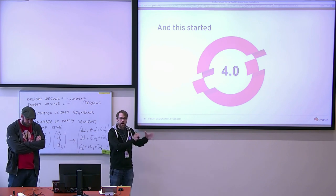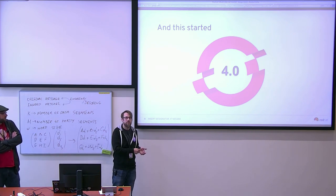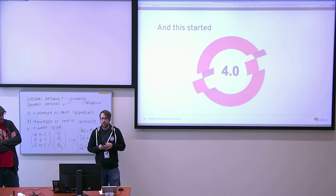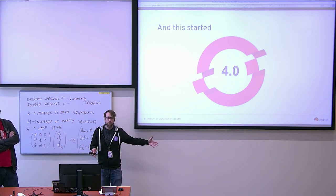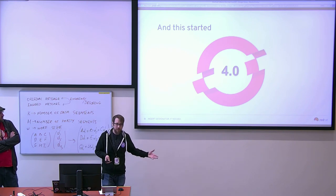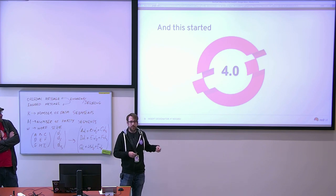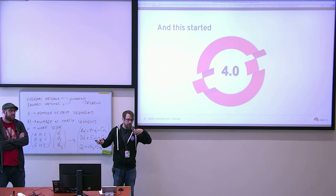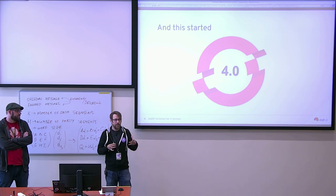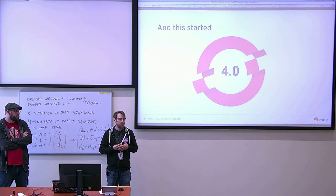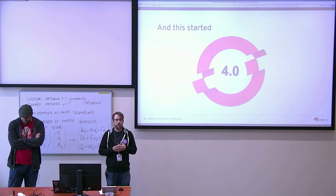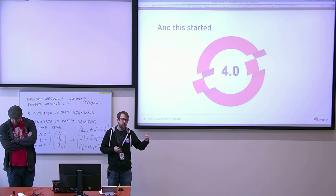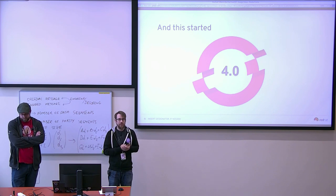Previously, installing OpenShift meant: you have hardware or a cloud, install your operating system — say, RHEL — get your keys set up, install OpenShift using an Ansible installer. Great, you have OpenShift on top of RHEL. Then on day two you need updates due to a CVE — you update the operating system, verify it works, update OpenShift, verify that works, and something might not be matching. There is a lot more management overhead at that point.